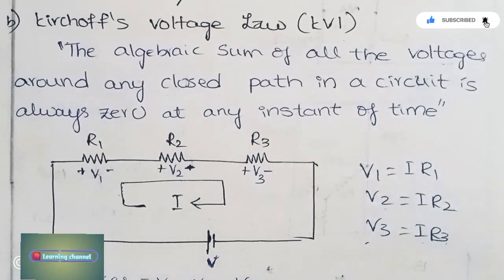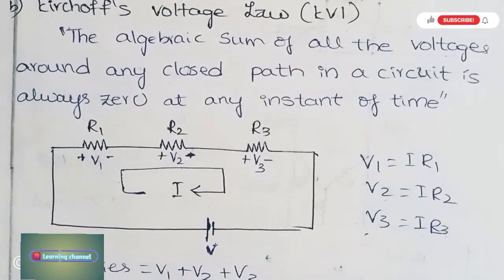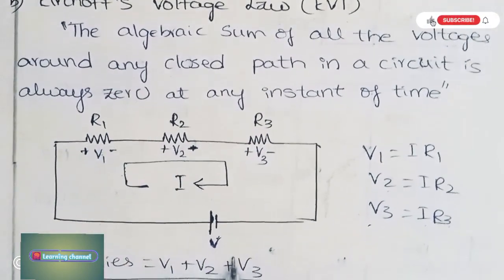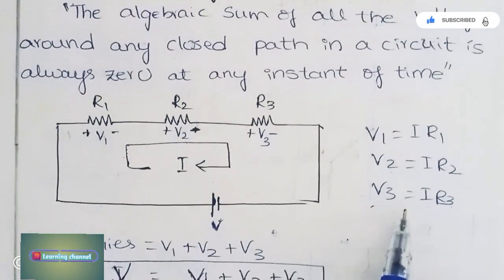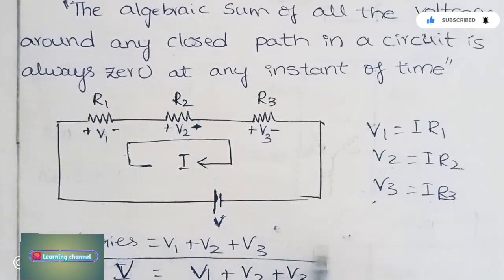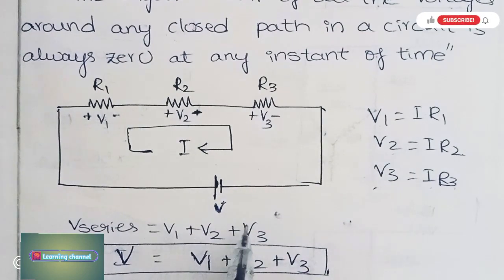According to KVL, these are in series. In series, the voltage will be divided. In parallel, the current will be divided. Here, the voltage V_series = V1 + V2 + V3. This is the definition of KVL.